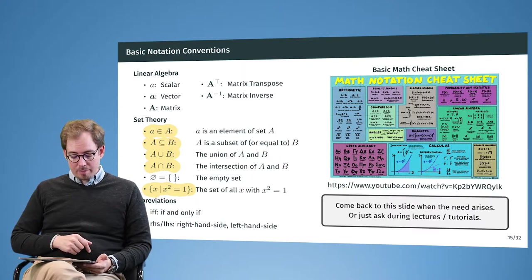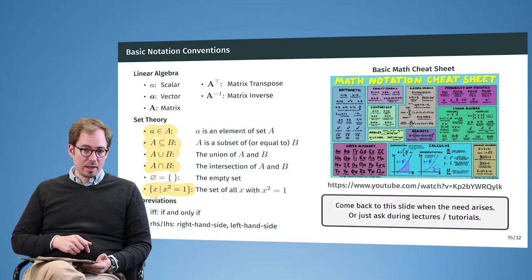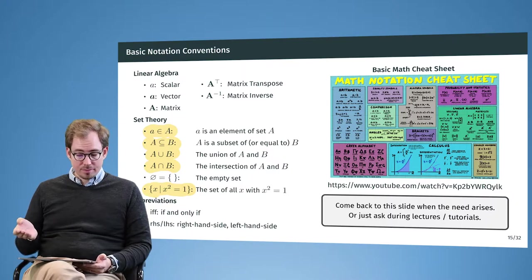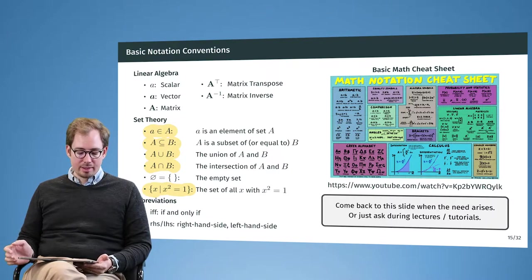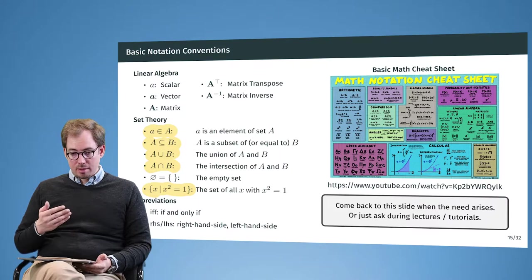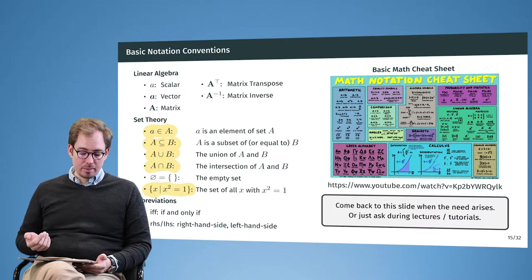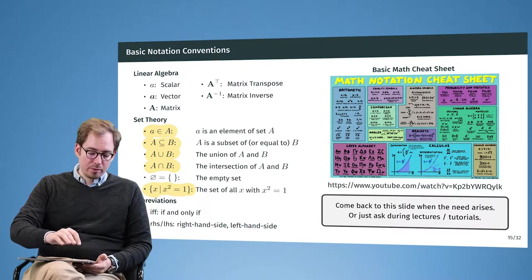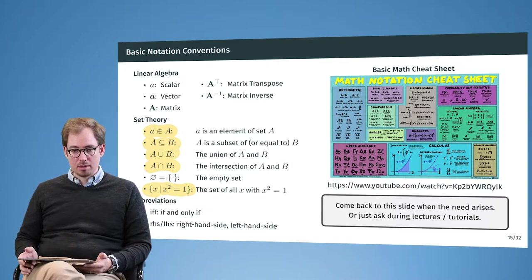There are some abbreviations that happen on the slides to shorten the text a little bit. For example, if and only if is abbreviated as IFF. And right-hand side, left-hand side is abbreviated. But usually in the presentation of the slides I will indicate everything once more. And if you follow the videos, everything should be out in the open.